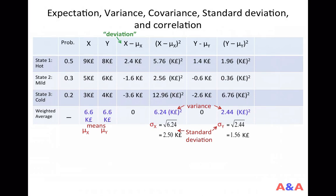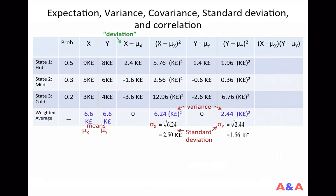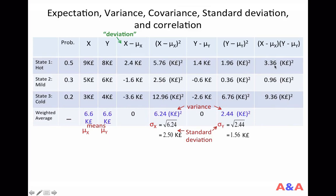Let's see how to compute covariance. To compute covariance, you should compute the product of deviations. This last column is the product of x's deviation from its mean and y's deviation from its mean. So for example, for state one, it's 2.4 thousand pounds times 1.4 thousand pounds, equal to 3.36 thousand pounds squared, and so on.